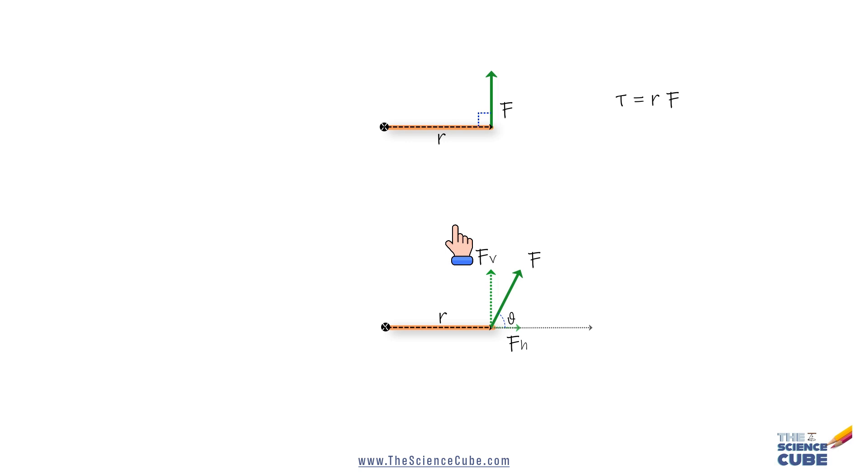As we said earlier, torque is calculated by multiplying the position vector R with that component of the force which is perpendicular to it. This force vector is not perpendicular to R as it was in the earlier case. But this component of the vector is perpendicular to the position vector R. So we calculate torque as a product of R and this component of force, that is F sin θ.